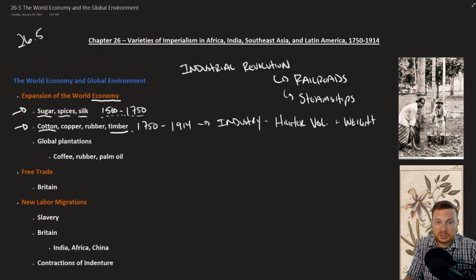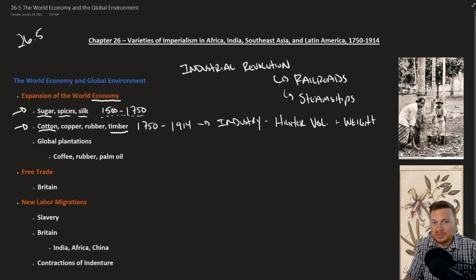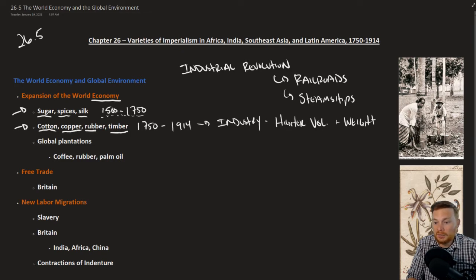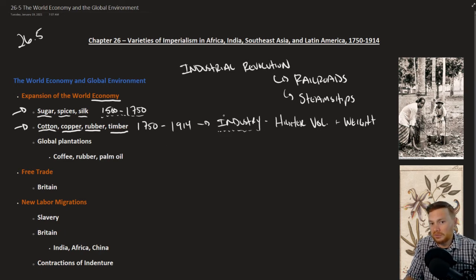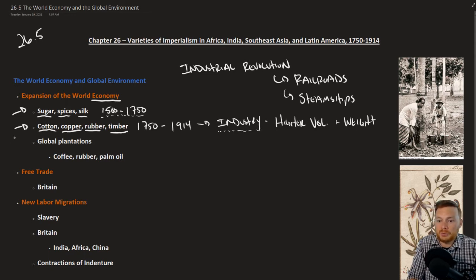But with the Industrial Period, from roughly 1750 to 1914, it became a lot more efficient and profitable to trade larger volume, larger weight commodities that are not quite as valuable. These are commodities more related to industry — things like copper and rubber, raw materials and natural resources specifically tied to industry. Rubber was used for belts and machinery parts, copper and other minerals as well. These are the types of goods being traded around the world in this period.